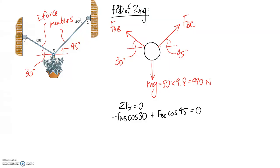So I'm going to rearrange for one of these variables to be able to substitute in at the next step. So if I go for FBC for instance, it's going to be equal to FAB cos 30. This swings to the other side and then we need to divide by cos 45. So I'm going to call this equation 1.